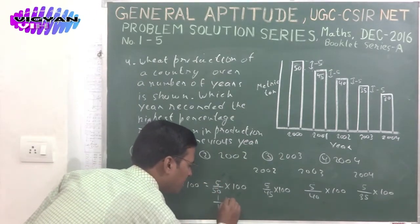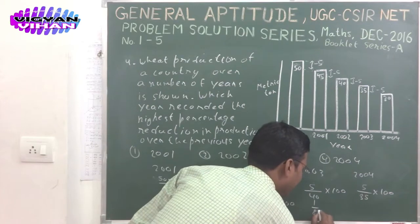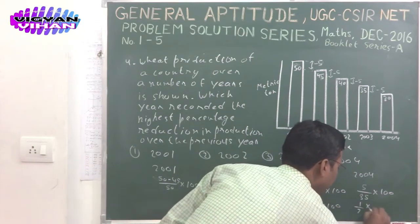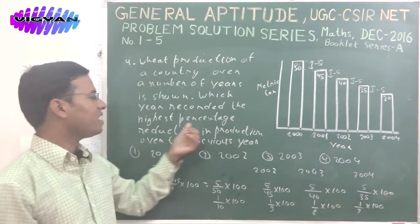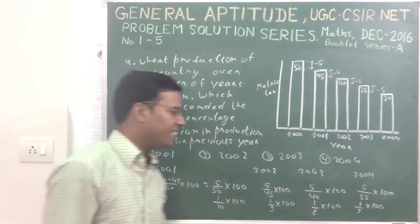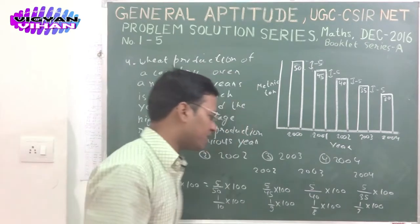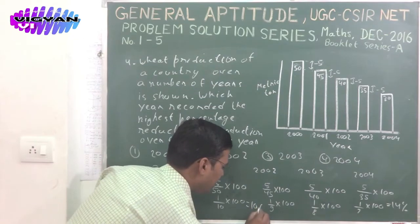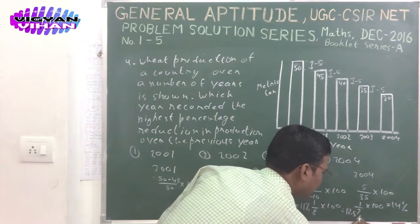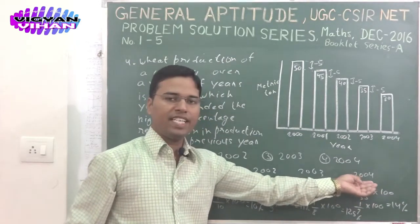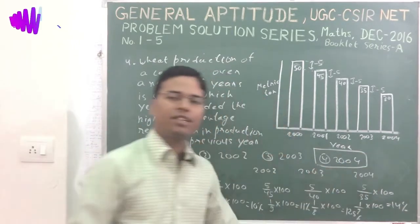The denominators are 10, 9, 8, and 7 respectively. The maximum value is 1/7 multiplied by 100, which is nearly 14%. You can calculate the other values: 10%, 11%, and 12.5%. The maximum percentage is for year 2004. The correct answer is option 4: 2004.